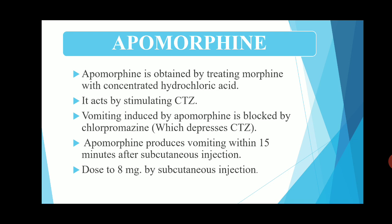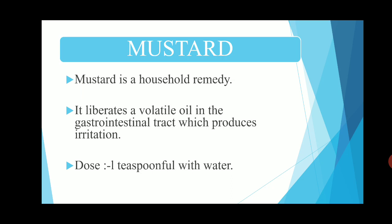The second drug is mustard. Mustard is a household remedy. It works by elaborating a volatile oil in the gastrointestinal tract, which produces irritation and thereby causes vomiting. The dose is one teaspoon full with water.